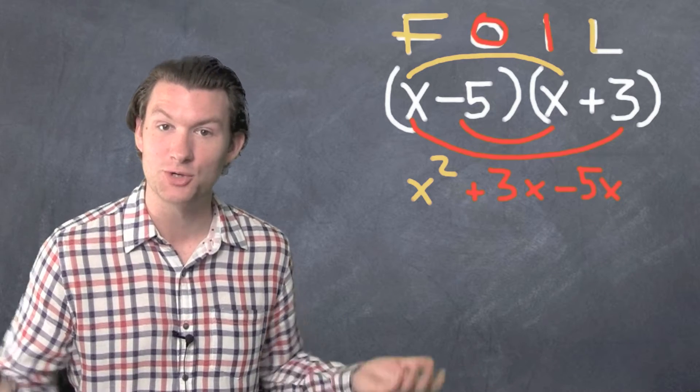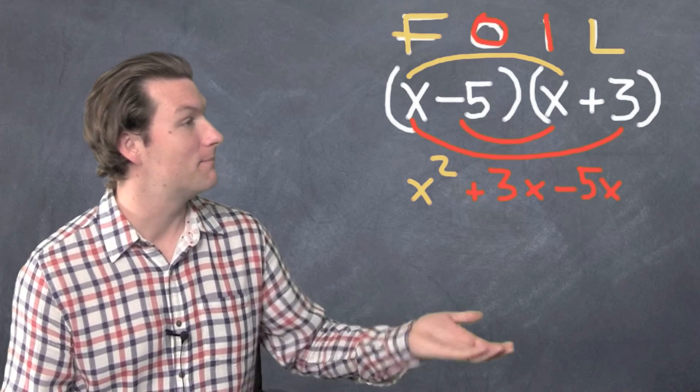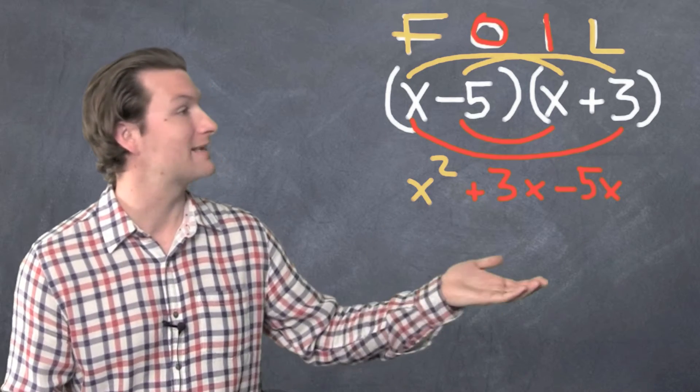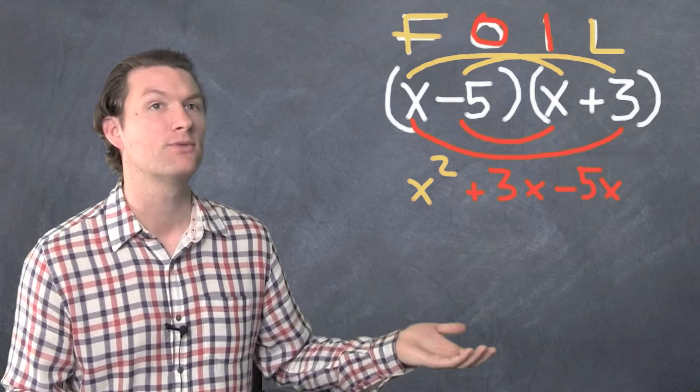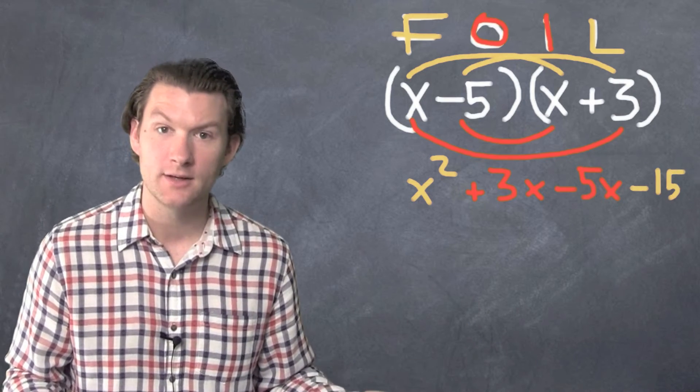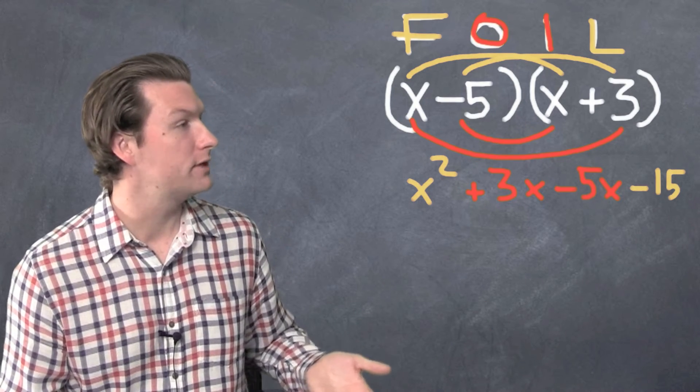Last things last. We do the lasts. We've got negative five times positive three. Negative five times positive three is negative 15. So negative 15.